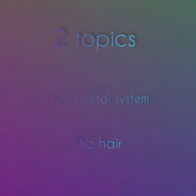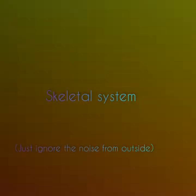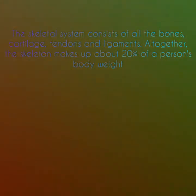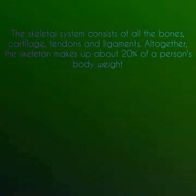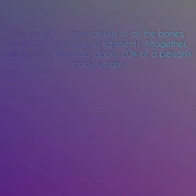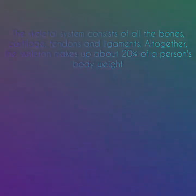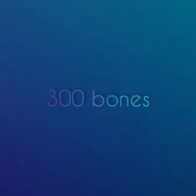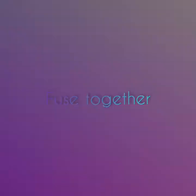First I will start with the skeletal system. The skeletal system consists of all the bones, cartilage, tendons, and ligaments. Altogether the skeleton makes up about 20% of a person's body weight. An adult skeleton consists of 206 bones, and babies usually have 300 bones. As they grow up, their bones fuse together, making them have the total of 206 bones.